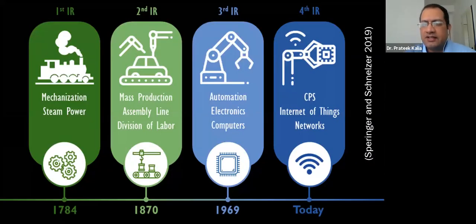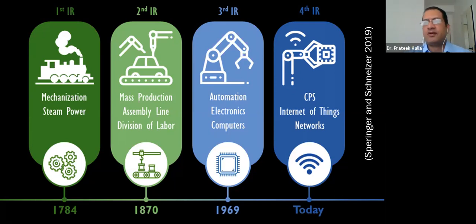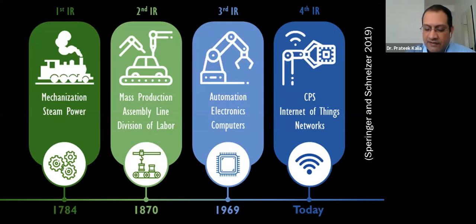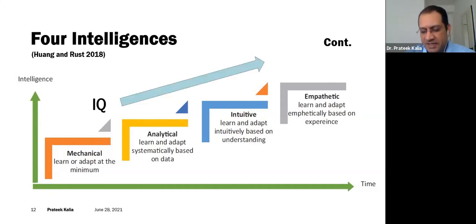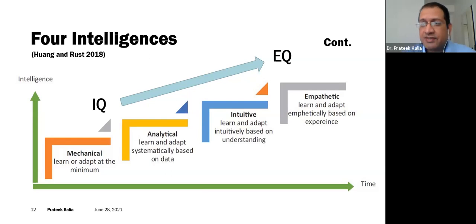Throughout the industrial revolution — from mechanization to mass production, to automation, electronics, computers, and now the Internet of Things — we can see the evolution of intelligence in computers, just from being a mechanical calculator to being more empathetic. Machines are becoming more emotional; they have emotional quotient, not just IQ. You never know — maybe after some time machines will have self-awareness and spiritual quotient as well.